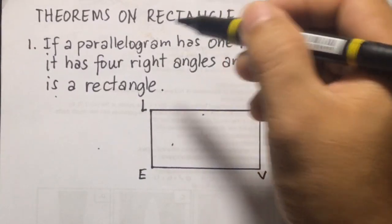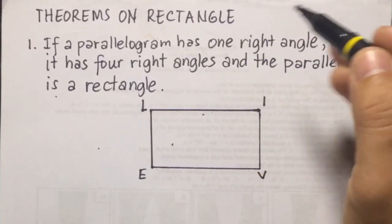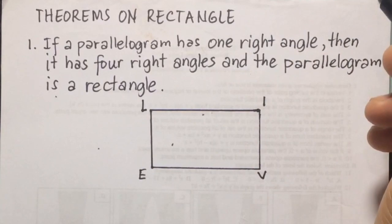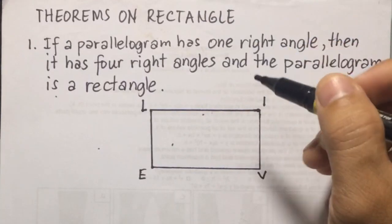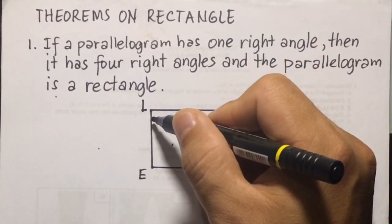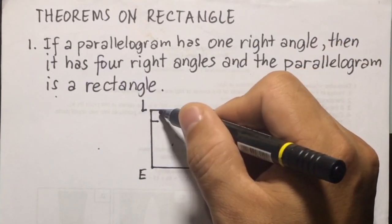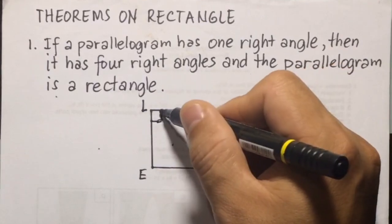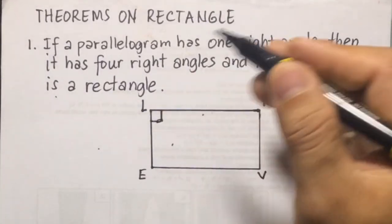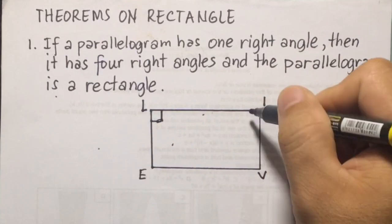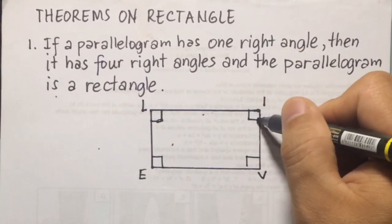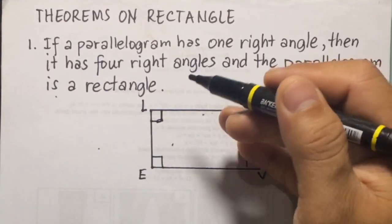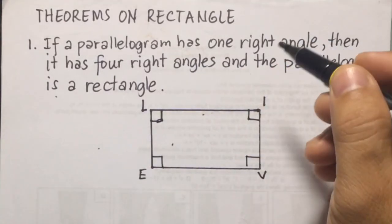Now, in this theorem, it states that if one of the angles is a right angle, then all of the angles are right angles. For example, if angle L here is 90, or right angle, then it will follow that all of these three here are also right angles. And we can say that this parallelogram is a rectangle.